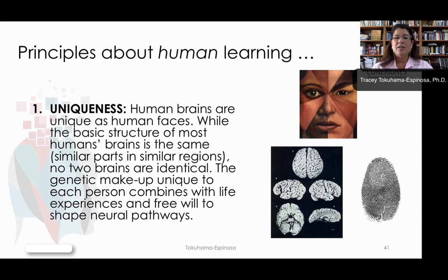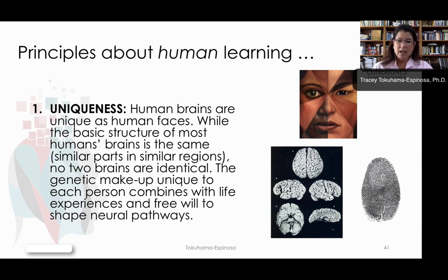Human brains are as unique as human faces. While the basic structure of most human brains is the same — similar parts and similar regions — there are no two brains that are identical. The genetic makeup, unique to each person, combines with life experiences and free will to shape the different neural pathways.